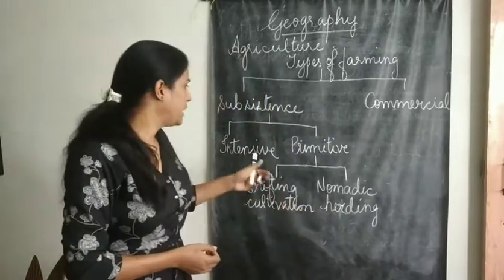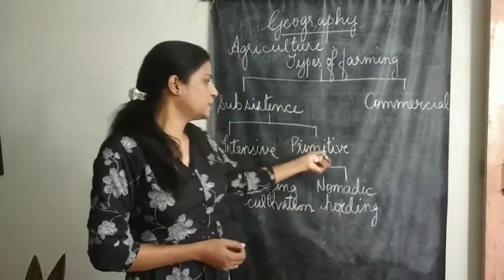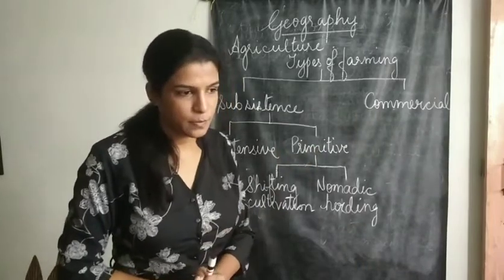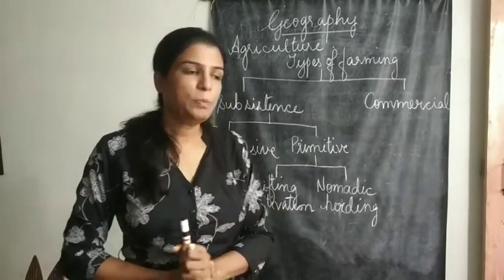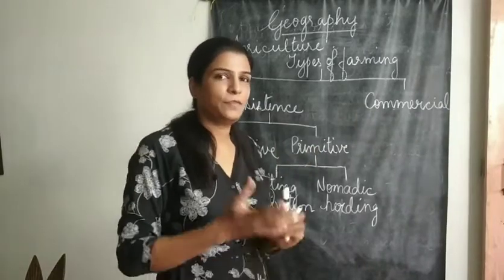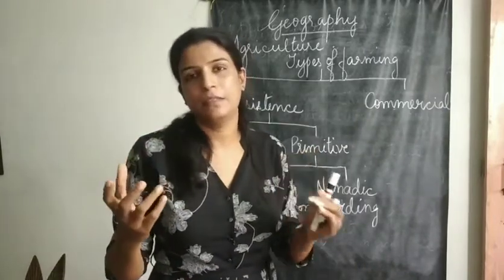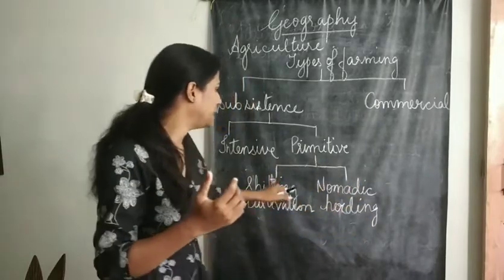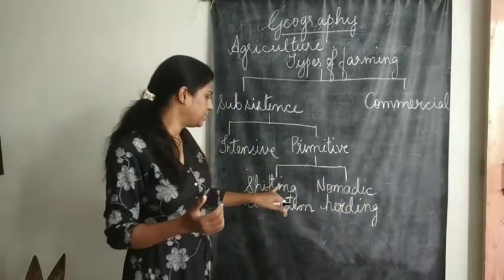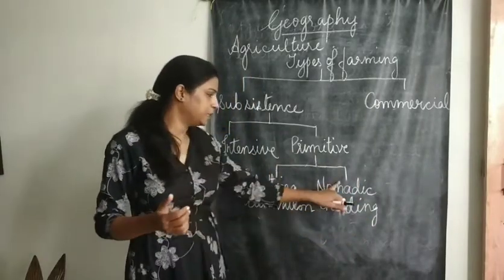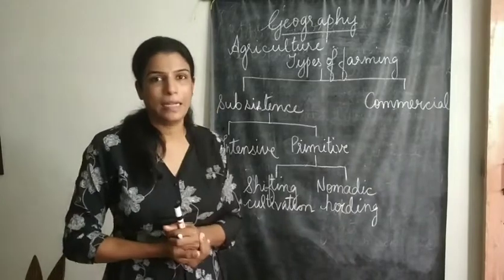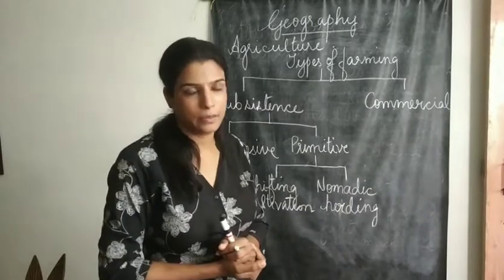Next comes primitive subsistence farming. Primitive methods have two main categories under it: shifting cultivation and nomadic herding.